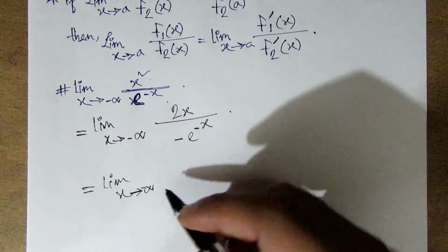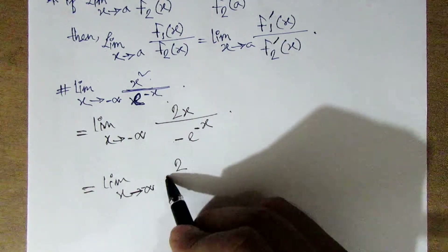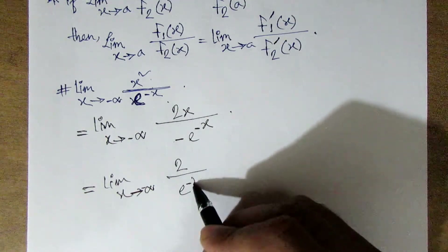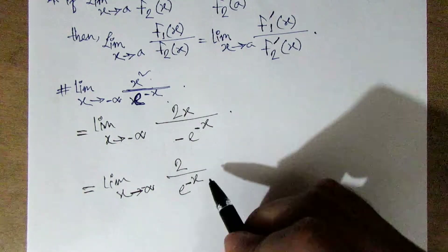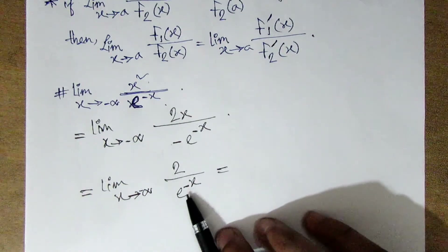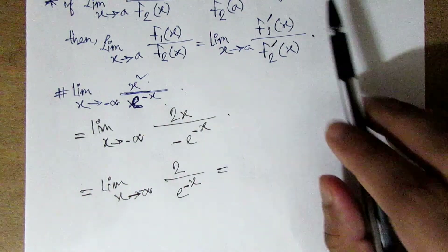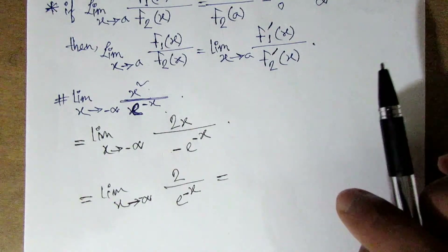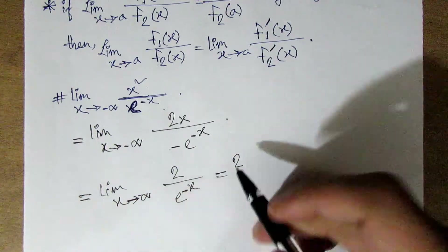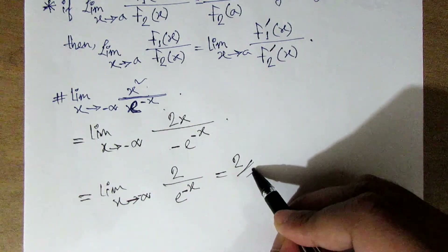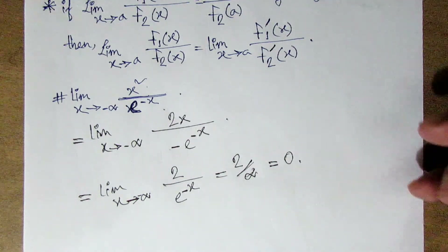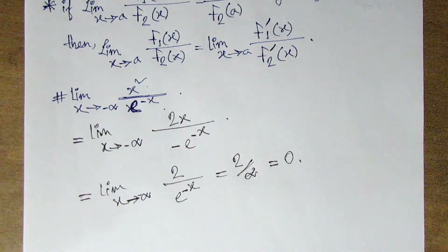Here we have negative infinity, twice the square root of 2, and negative square root of 2, with e to the power of negative x. Here we have an ∞/∞ form, which gives us 2. Then we have a constant over infinity form. If you have constant over infinity, the result is 0. So we differentiate and substitute the limit value, giving 2 over infinity, which equals 0.